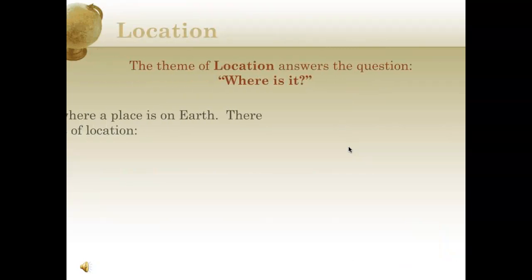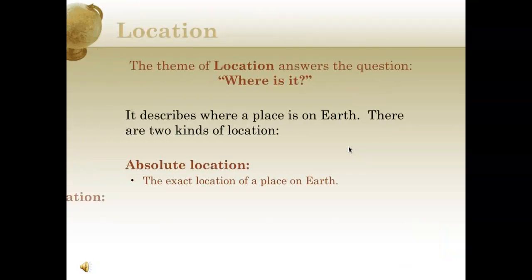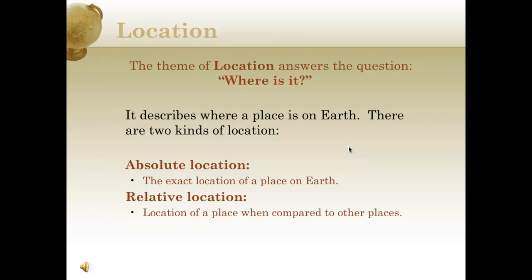Next is location. The theme of location answers the question: where is it? It describes where a place is on Earth. There are two kinds of location. There's absolute location, which is the exact location of a place on Earth, and then there's relative location, which is the location of a place when compared to other places. For example, if I were to ask you where is your school, many of you might use general terms like relative location to describe it.